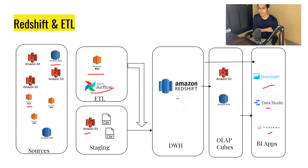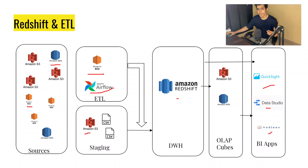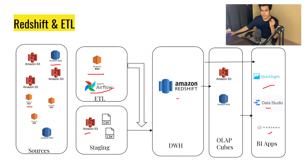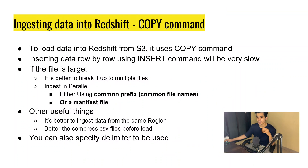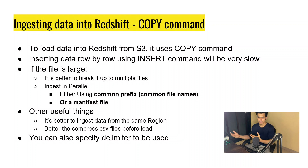Now we understand what the architecture looks like from a technical perspective. Let's talk about how to load data at scale — how to load big data into Redshift — and it can be done in a single command. This is ingesting data into Redshift using the COPY command. Amazon provides us the COPY command to load data from S3 to Redshift.